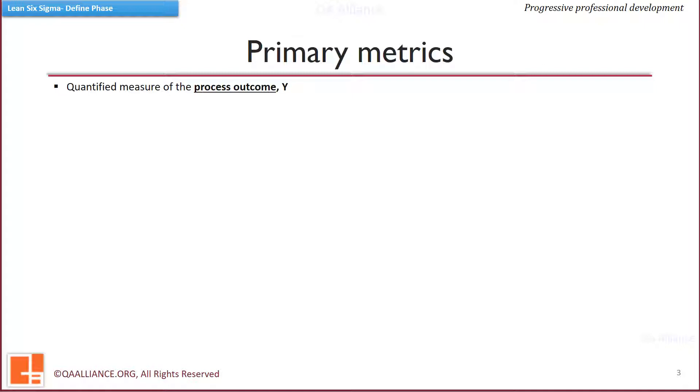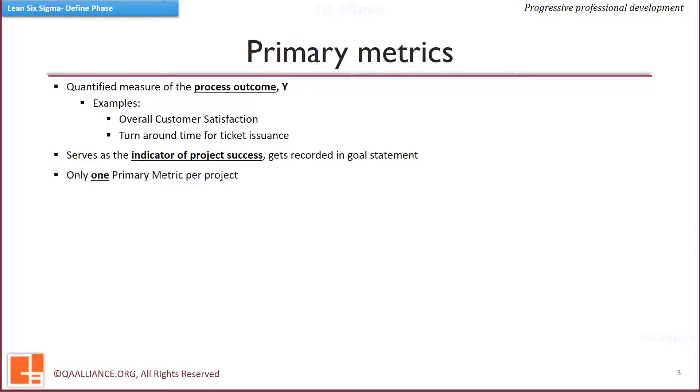Primary metrics should represent the why, the big why which a project wants to improve. For example, customer satisfaction. It should be addressed in the problem and goal statement as well.